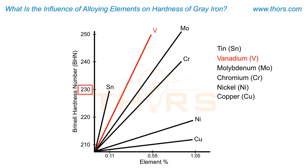When vanadium content is above 0.5%, the hardness level increases to 250 Brinell. Molybdenum and chromium also increase the hardness levels of grey iron when their individual concentration is 0.8%. Nickel and copper increase the hardness levels to a lesser degree.